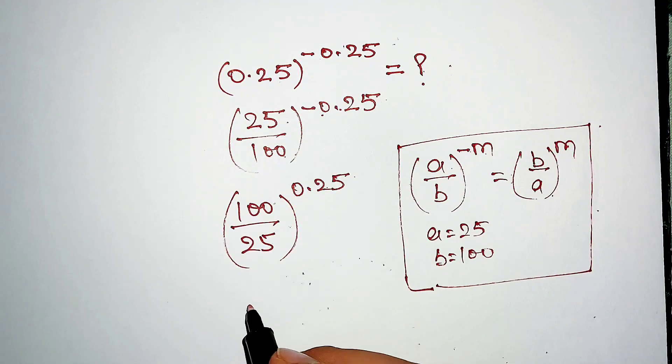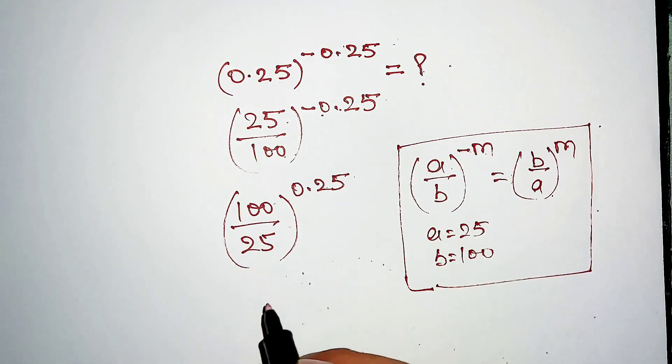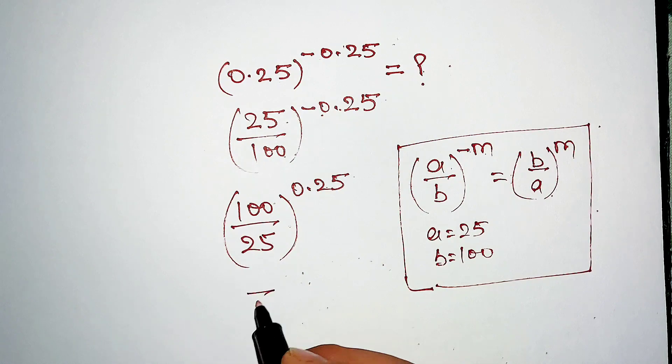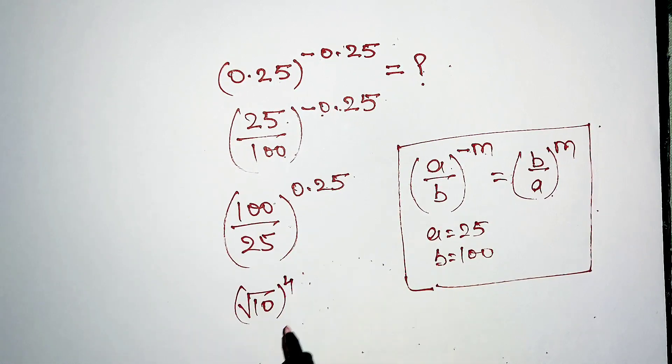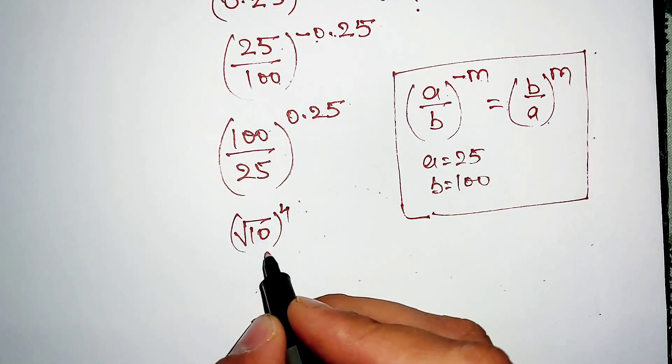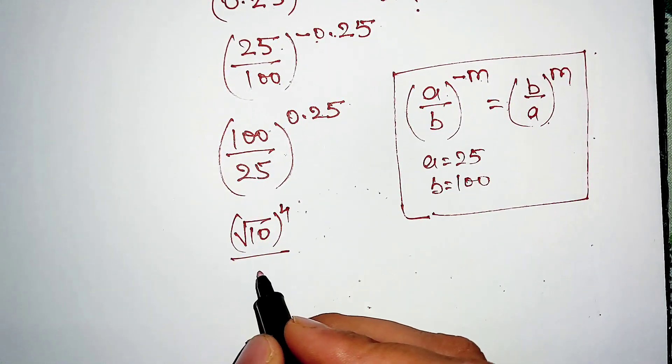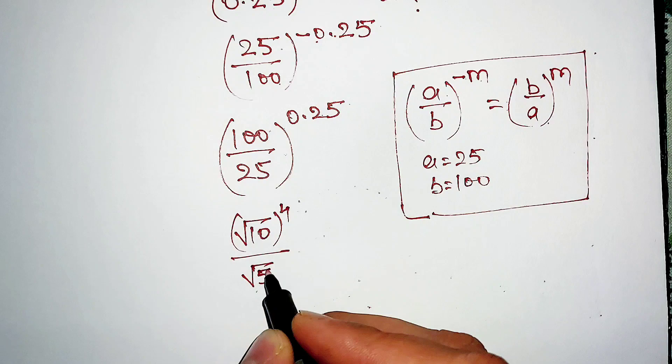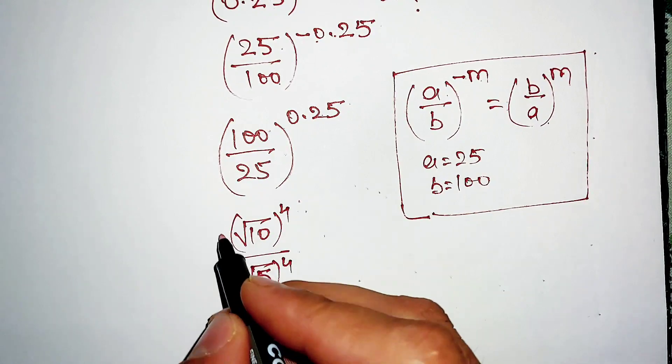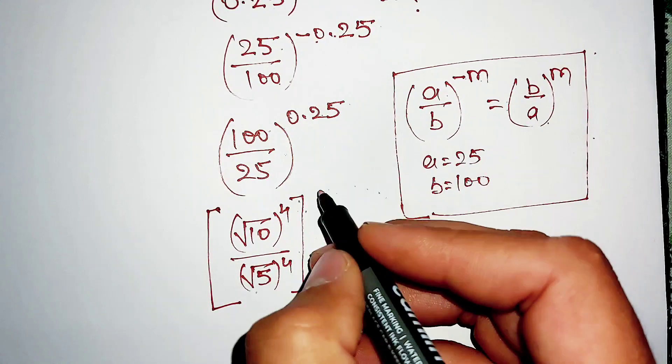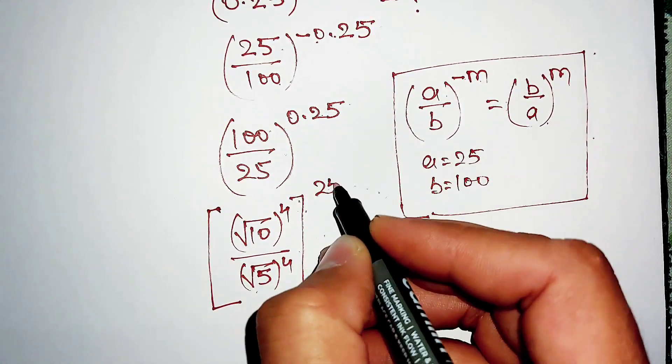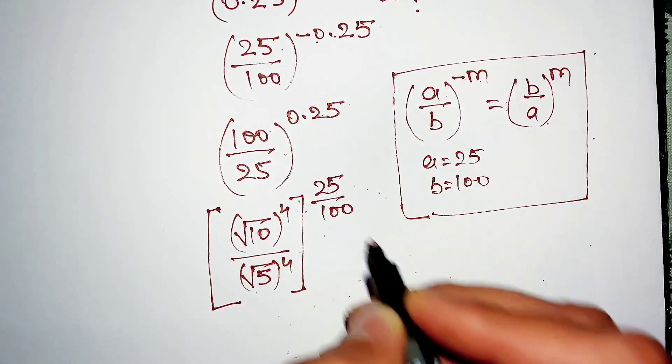Now we can write this 100 as square root of 10^4, and this 25 can be written as square root of 5^4, and this 0.25 can be written as 25 divided by 100.